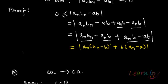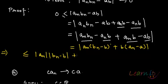Now, by the triangle inequality, this will be less than or equal to |a_n|·|b_n - b| plus |b|·|a_n - a|.